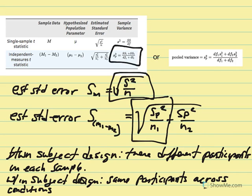Because we have two separate independent samples, we can think of it as simply doubling what we did in chapter 9. Each sample has its own respective statistics — its mean, variance, degrees of freedom — and all of those need to be combined so that we can talk about one statistic that represents the difference between the two samples.